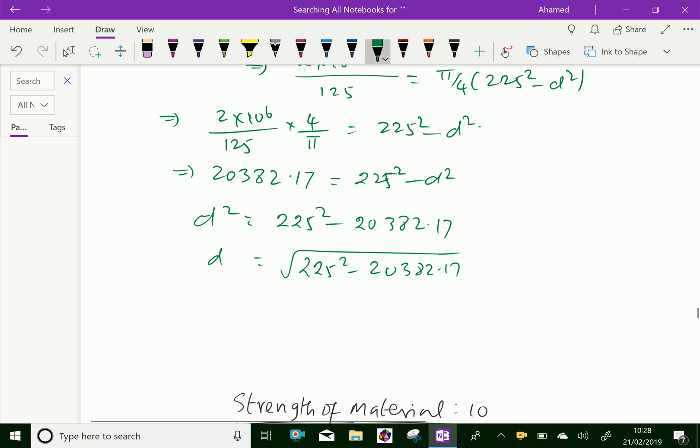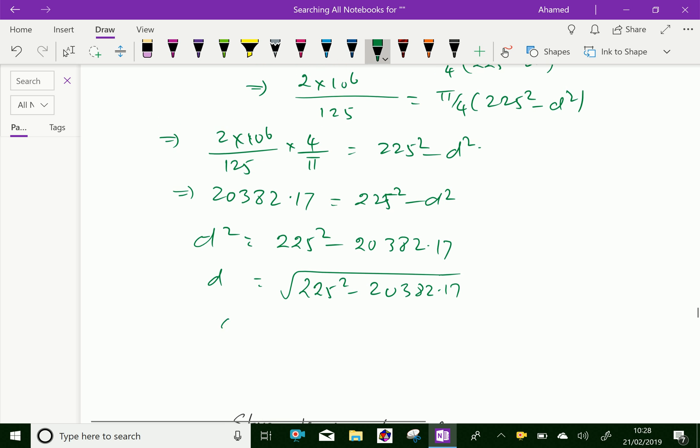Square root of 225 squared minus 2382.17 equals 173.9. Therefore, the internal diameter of the steel pillar is 173.9 mm. We have done. Please subscribe our YouTube channel.